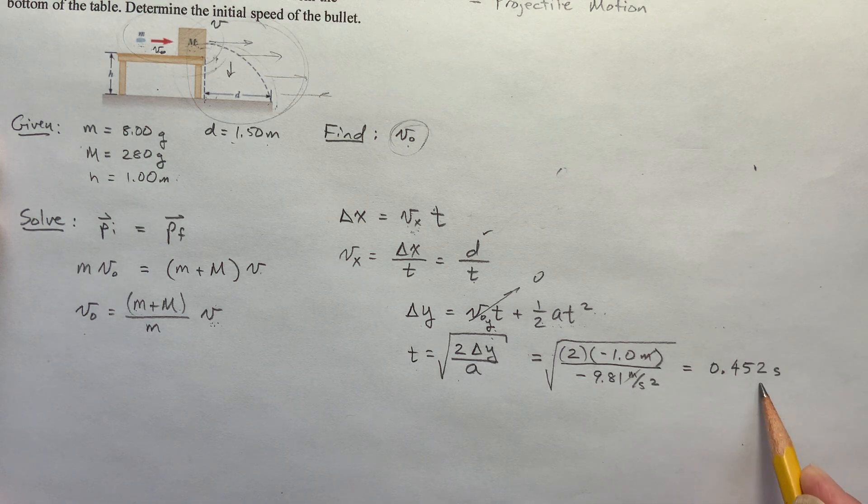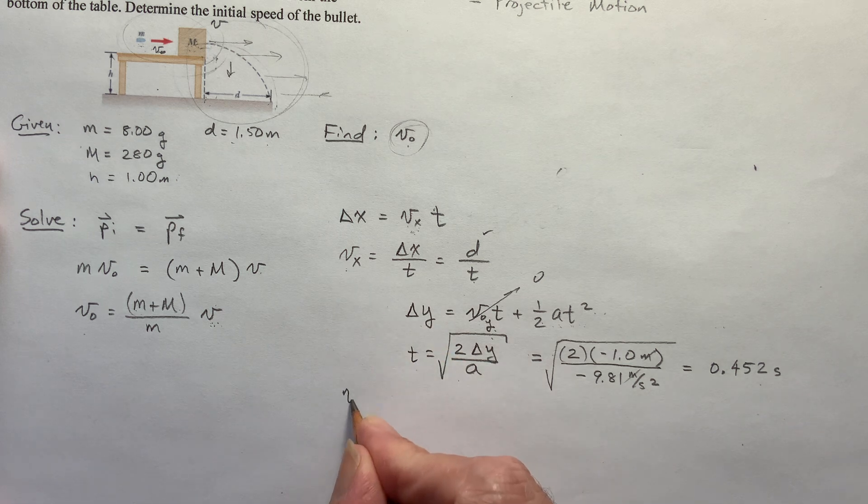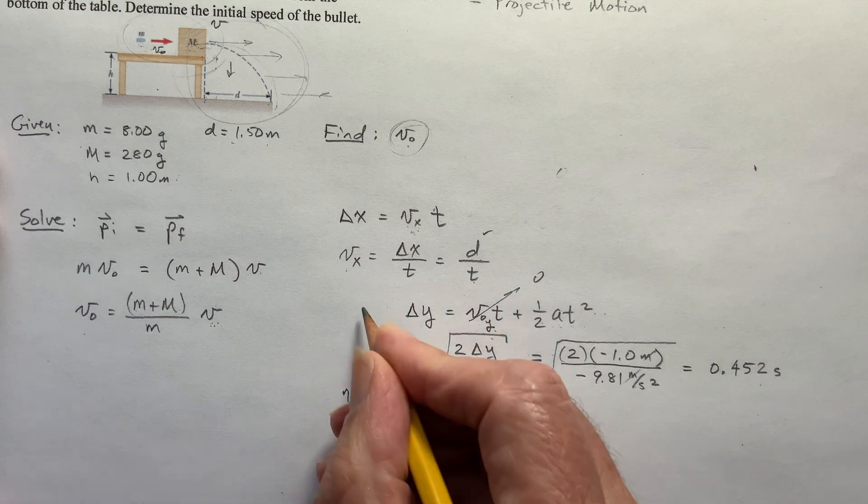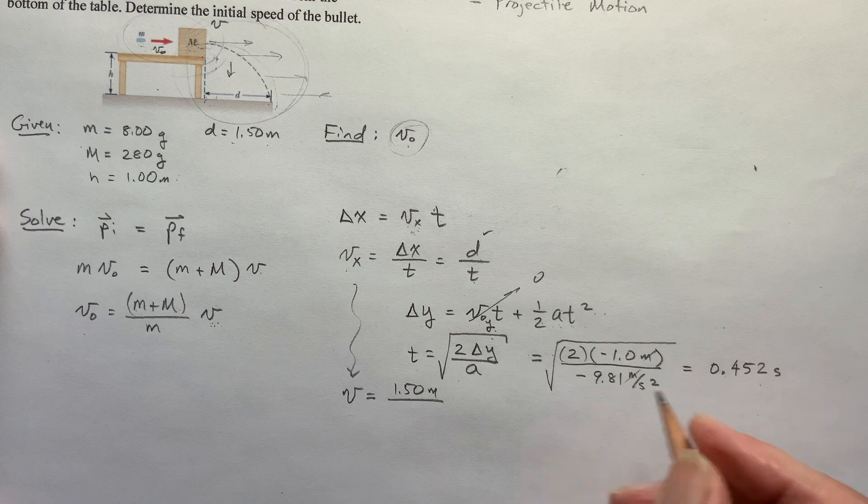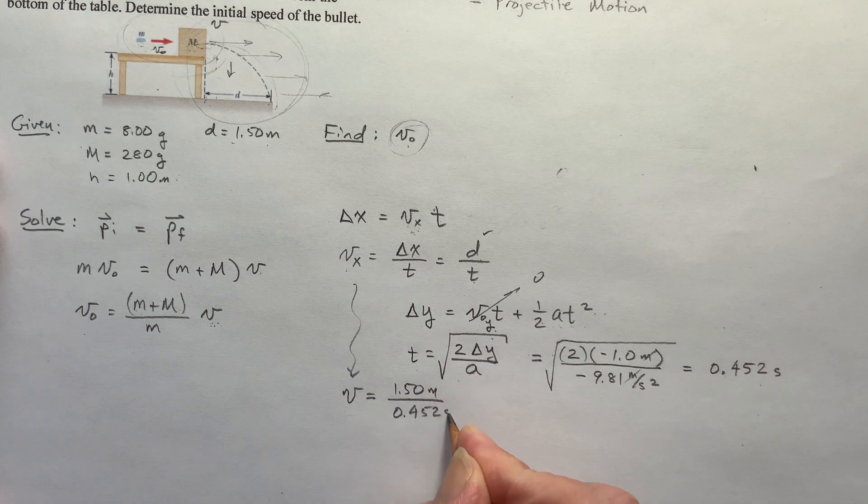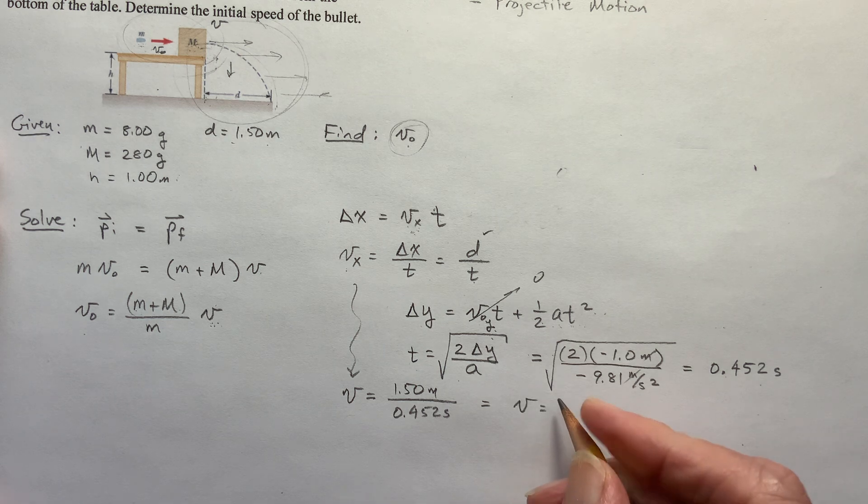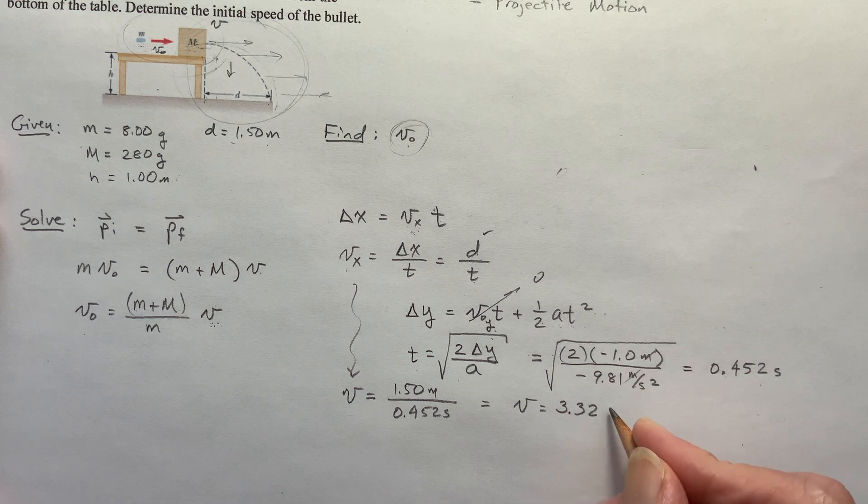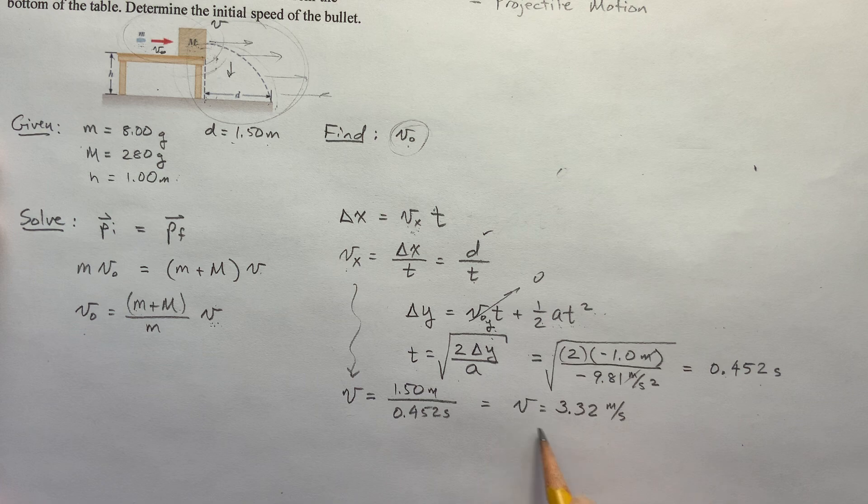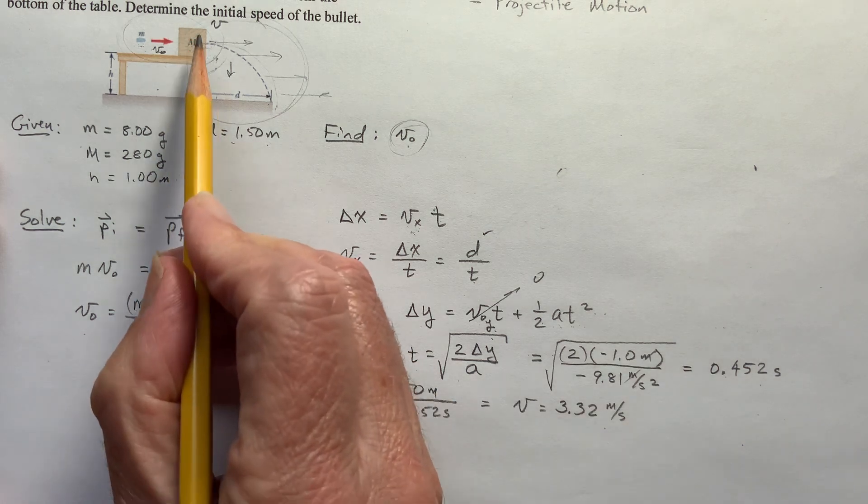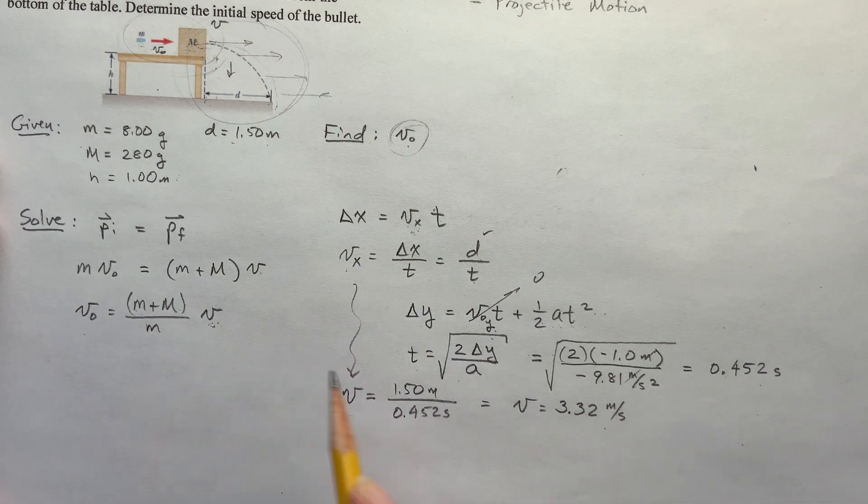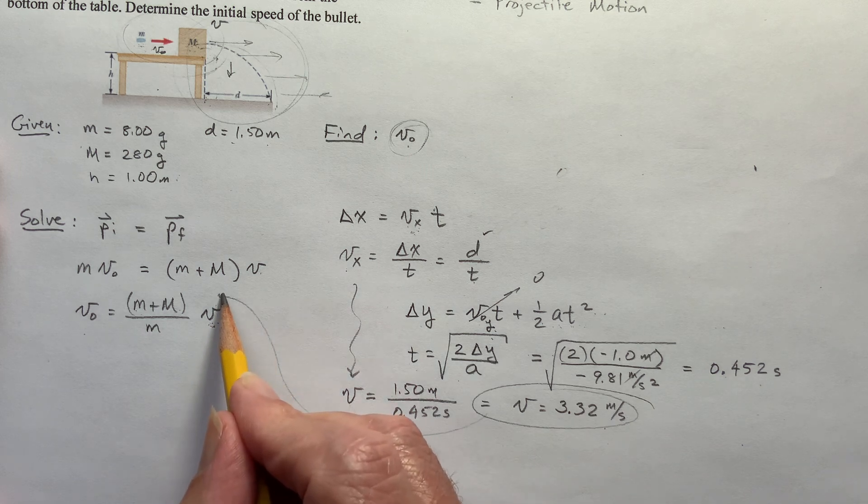Now I've got time, so now I can figure out what this velocity is. This velocity is d, which is 1.50 meters, divided by the time, which is 0.452 seconds. When you plug that into your calculator, you get 3.32 meters per second. So this is the velocity of this block after the bullet has pushed it off the edge, and the bullet's embedded in it. And that's what we wanted to find here. I'm going to put this right in there, and now we can just solve for v0.